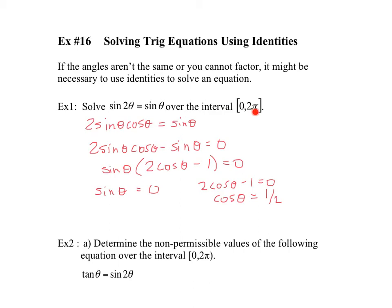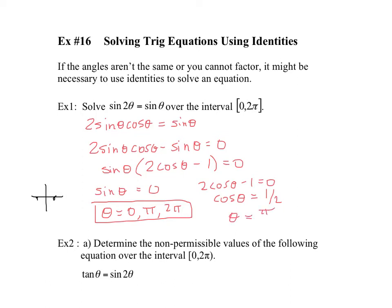Now I want to solve for the interval 0 to 2π, including both values. If sine theta equals 0 — imagine your unit circle — sine theta equals 0 when y equals 0. So theta equals 0, π, and 2π, because 2π is part of the answer. That's the solution for this branch. On the other branch, cos equals 1 half. That's an exact value on your unit circle where x equals 1 half. So this is π over 3 and 5π over 3. So the solutions are 0, π, 2π, π over 3, and 5π over 3.